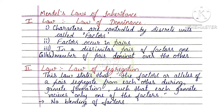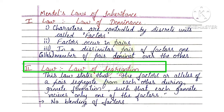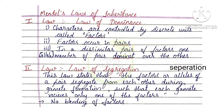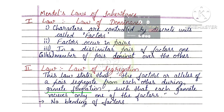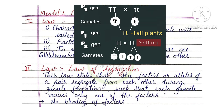The Second Law is the Law of Segregation. The law states that the factors or alleles of a pair segregate from each other during gamete formation, such that each gamete receives only one of the factors.